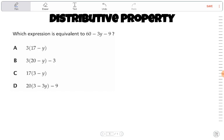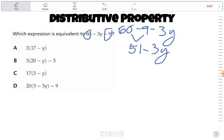Well, this is not in its simplest form, because we have 60 here, and I have minus 9. I can combine those, and I can write 60 minus 9 minus 3y. I can combine 60 minus 9 into 51, and I get 51 minus 3y.